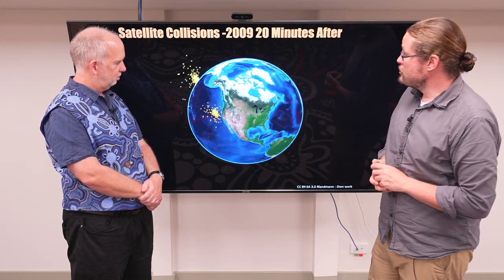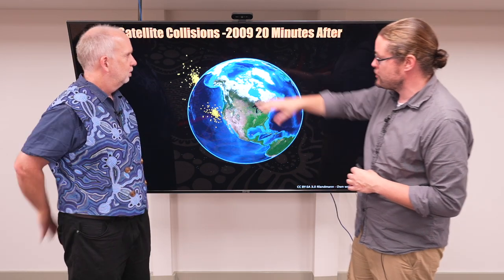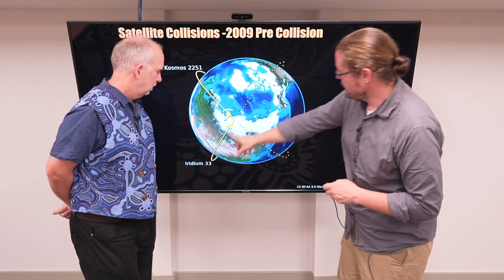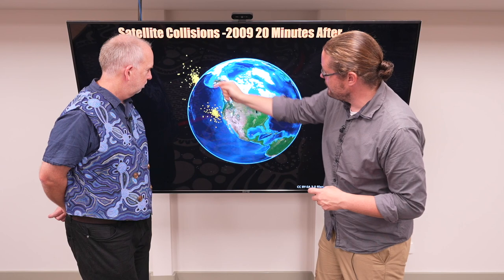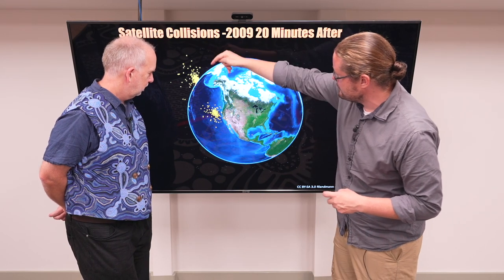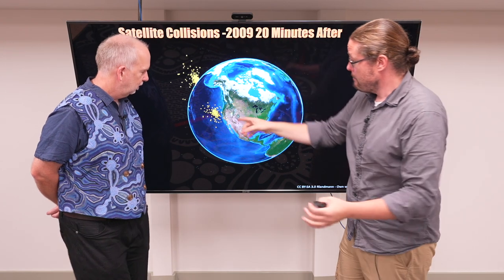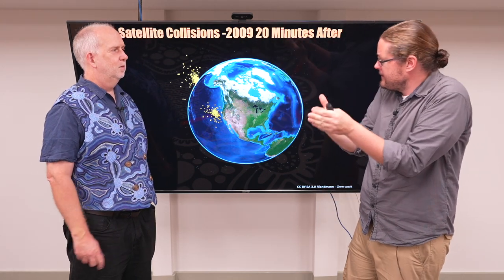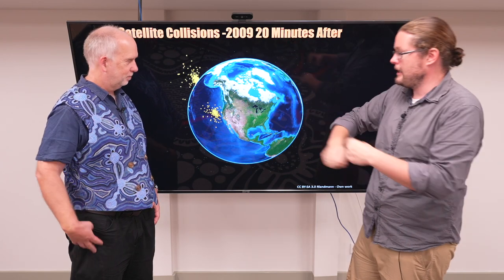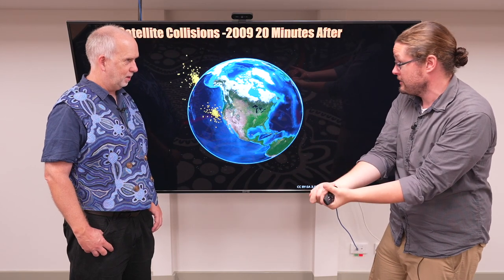Twenty minutes after the collision, this is the catalogued bits of junk. Here's our satellites coming this way and this way. Now we have this debris field that's gone around and is starting to spread out. Both satellites are spreading out - it's not like they collide and stay in one spot. They still have their energy, speed, and momentum, so it's still carrying them in that general direction.